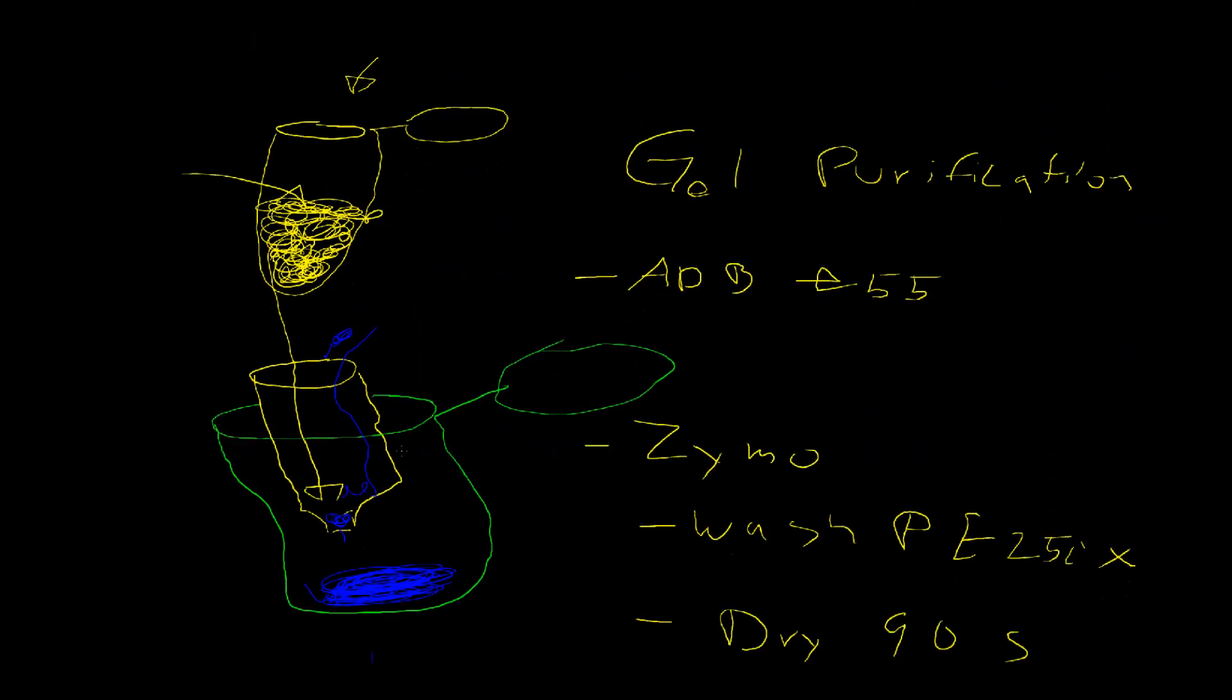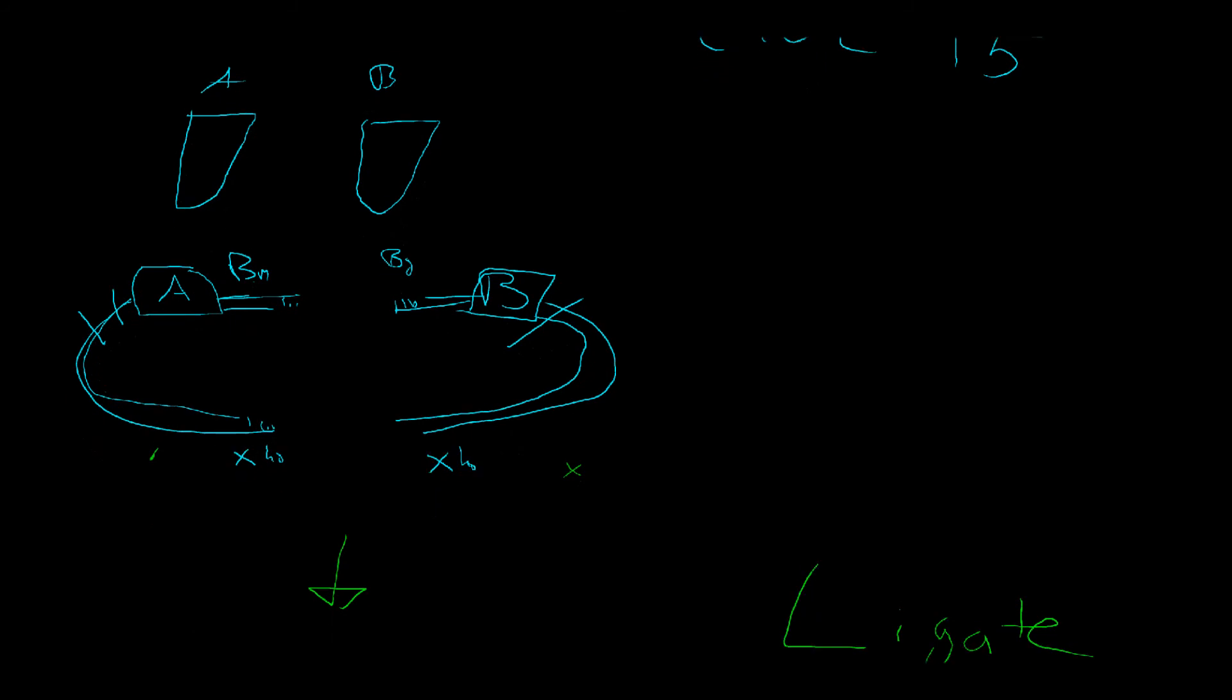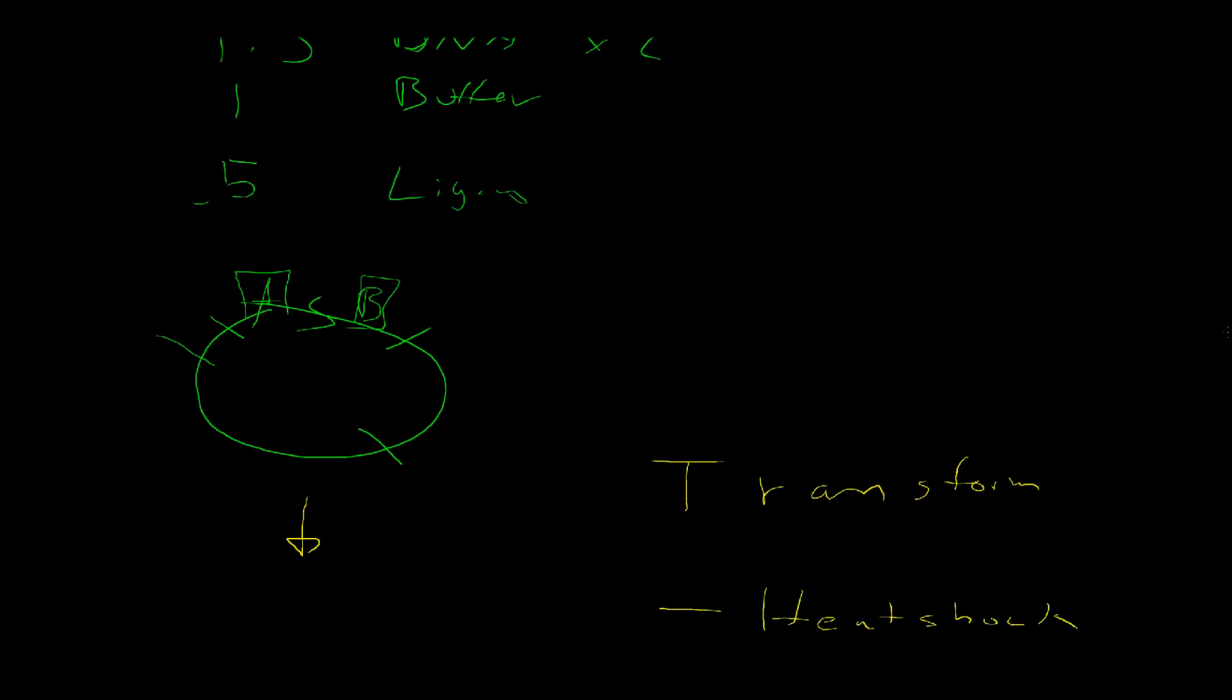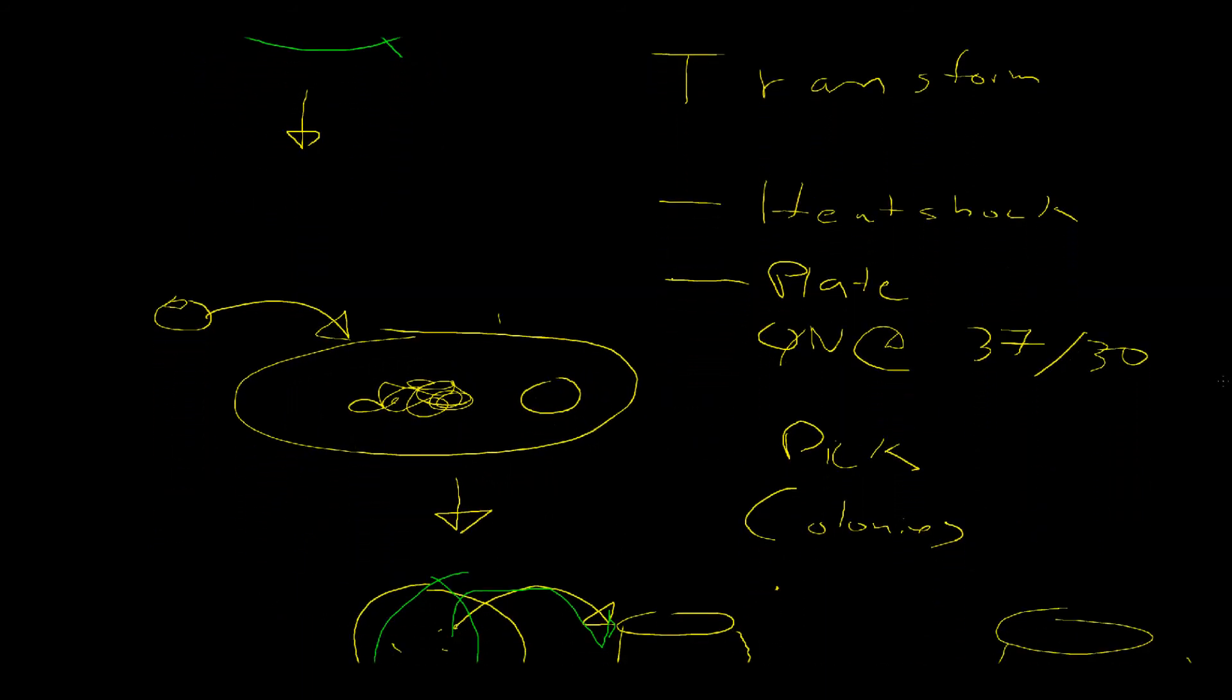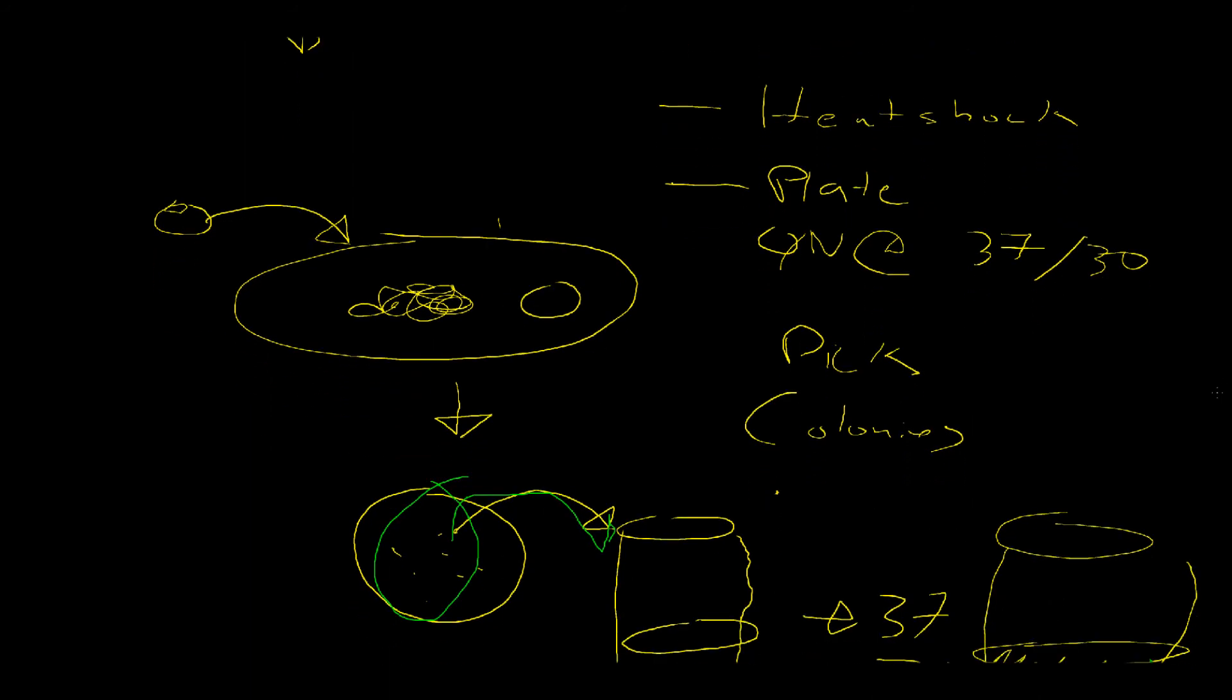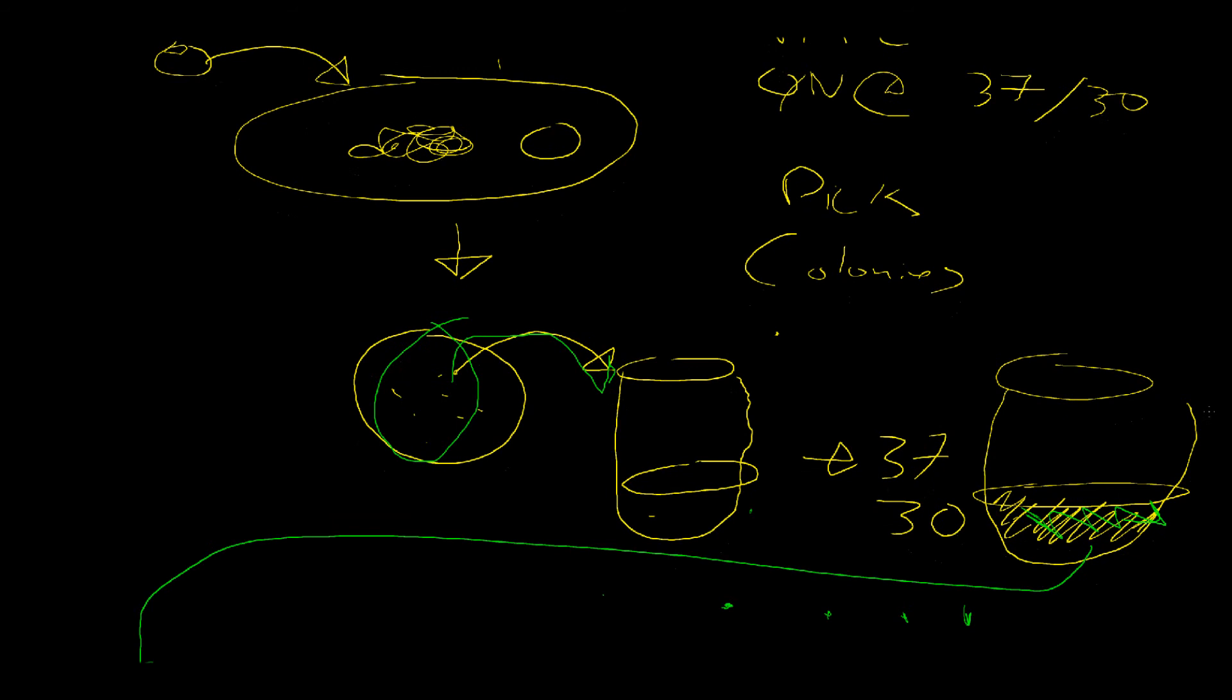We cut out the band that we want. We gel purify the band. We elute our digested DNA. We then get ready to do a ligation. This is what the ligation should look like. We do our ligation. That's the formula for the ligation. We then transform our new composite plasmid into the bacteria. We recover. We plate on the appropriate antibiotics.